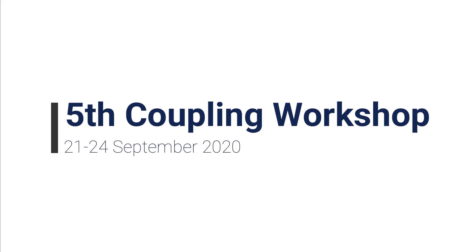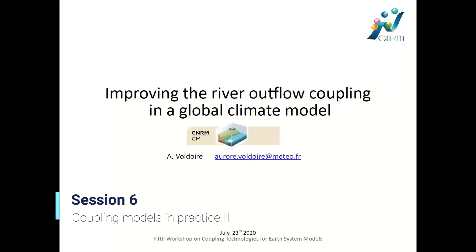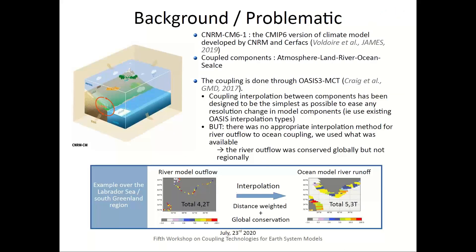Today I will deal with the river-to-ocean coupling in a global climate model, going back to the global scale. We work with the CNRM-CM, a model developed at CNRM and SURFEX, in a version developed for the CMIP6 experiments. The model includes all classical coupled components for the physical parts: the atmosphere, the land, the river, the ocean, and the sea ice. The coupling is done with OASIS3-MCT.